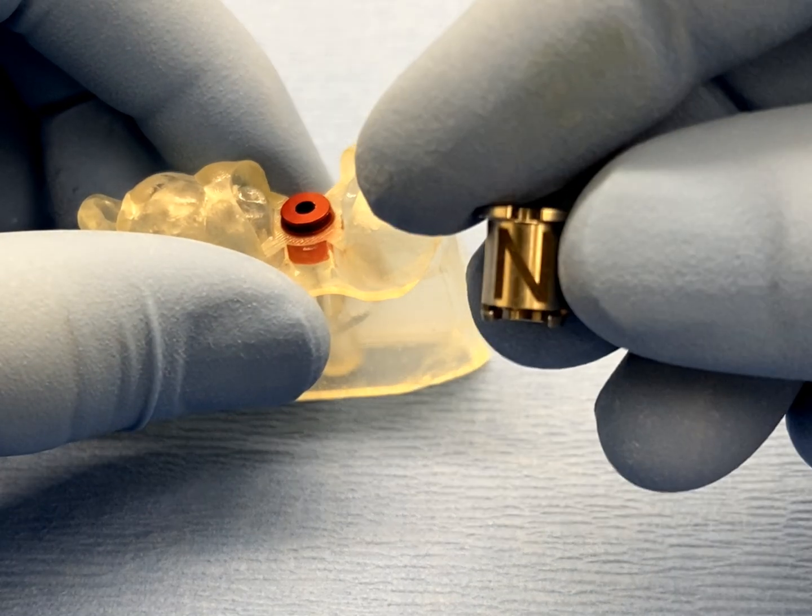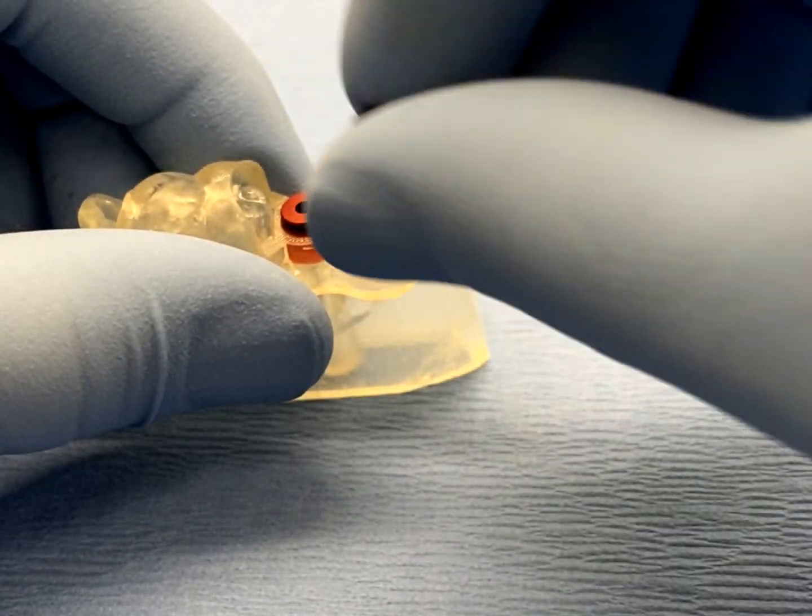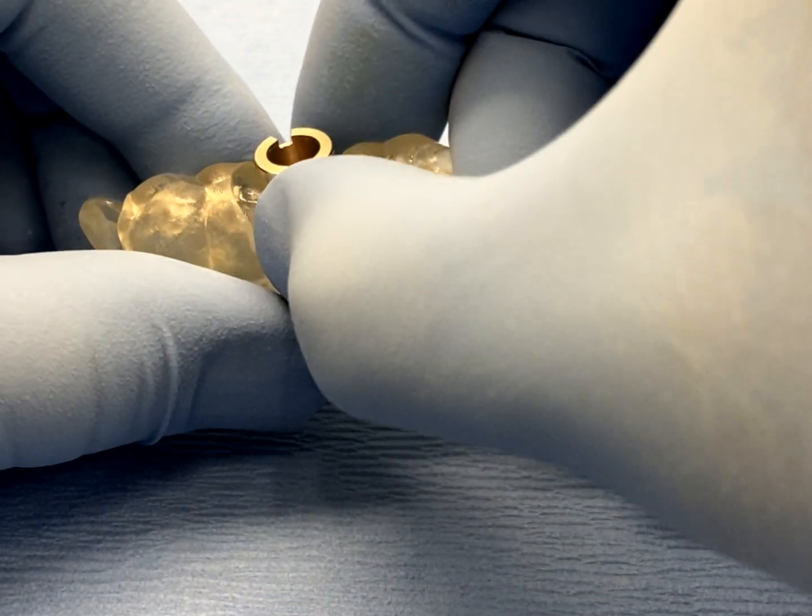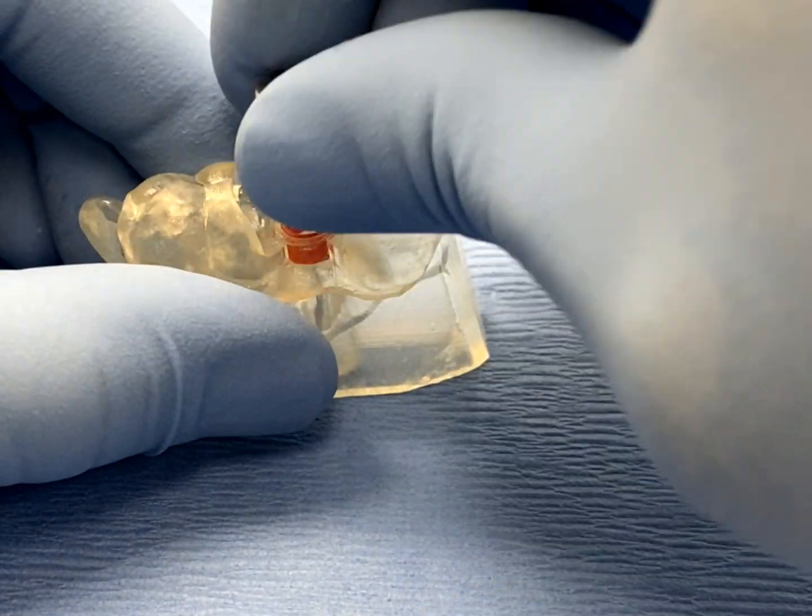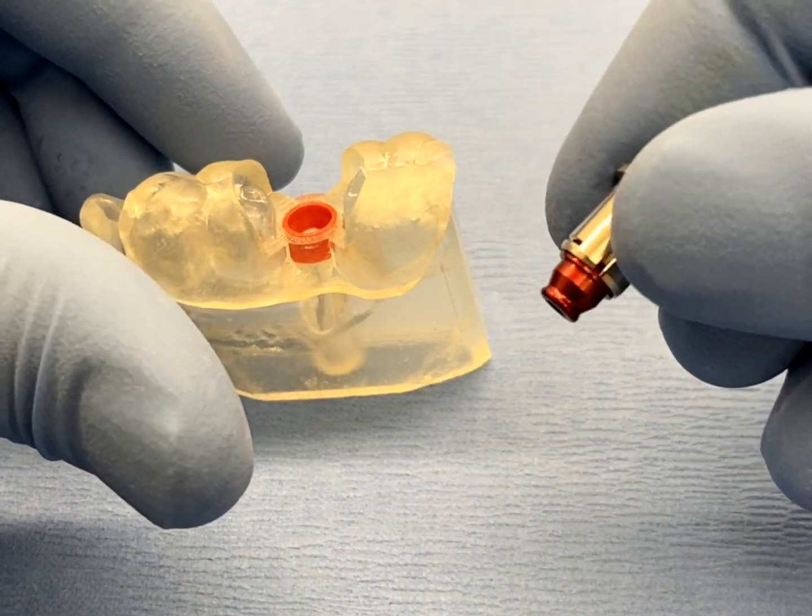Once the curing process has been completed, simply remove the surgical guide analog from the newly formed surgical guide with a GRS IR tool.